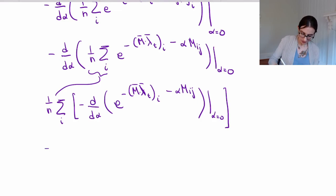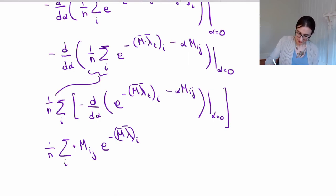So what happens when I do that? I get 1 over n, and then take the sum over i. When I take the derivative of that, what's on the inside there, there's a negative sign that comes down from the exponent and it cancels my negative sign out front. So I actually end up with a positive sign, and I have an m_ij. And then there's my e to the m lambda_i, m lambda t_i. And now I'm supposed to put a minus alpha m_ij, but I'm supposed to send this alpha to 0 here, so that term actually ends up just getting wiped out.